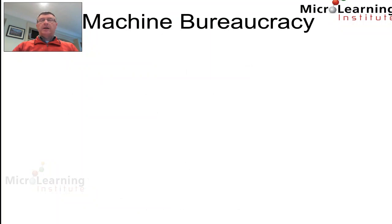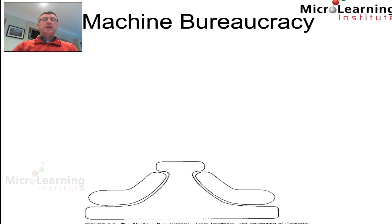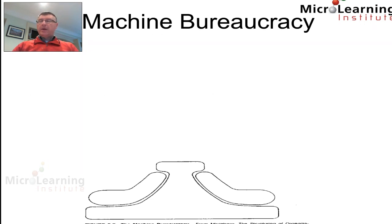Next, we look at what Mintzberg refers to as the machine bureaucracy. Here we can see we have a strategic apex, the emergence of the middle line, and also some support staff and some technostructure, as well as an operating core.